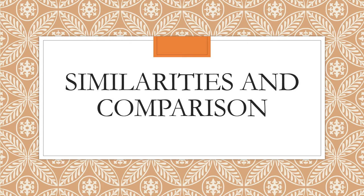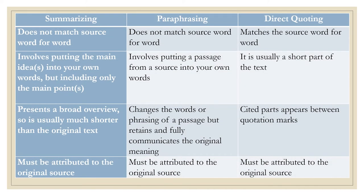Let's proceed to the similarities and comparison on the techniques on how to avoid plagiarism. What are the ways of avoiding plagiarism? Let's remember these techniques. The first one is summarizing. The second one is paraphrasing. The third one is direct quoting. What could be the similarities and differences among these three techniques?